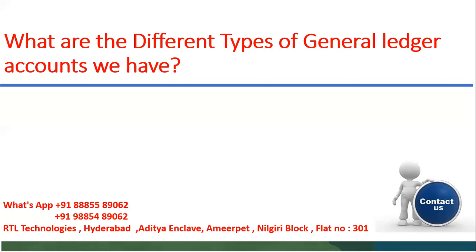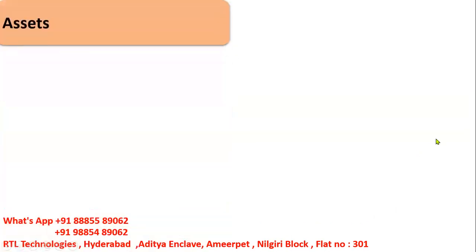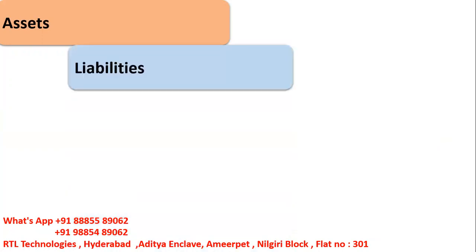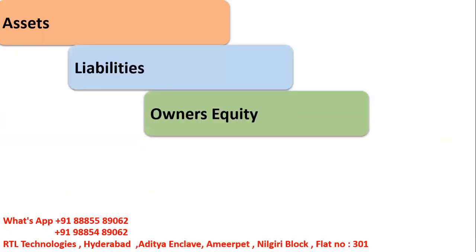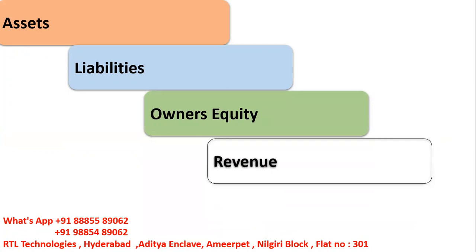The question is: in General Ledger, what are the different types of GL accounts? There are majorly five types, and we'll also find two more — budget credit and budget debit. The first one is Assets, then Liabilities, then Owner's Equity, then Revenue, and then Expenses.